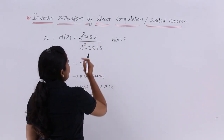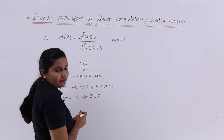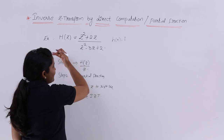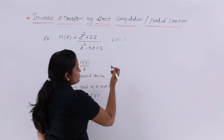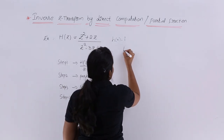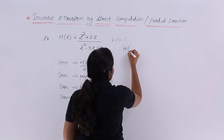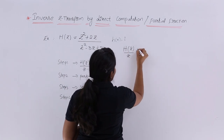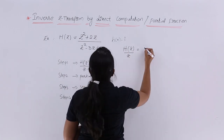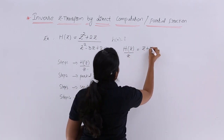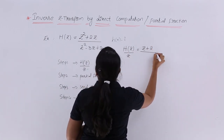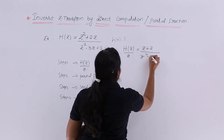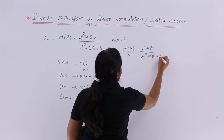Here, I take a common factor of z from the numerator and send that z to the other side. That gives us H(z)/z equal to (z + 2) divided by (z² - 3z + 2).